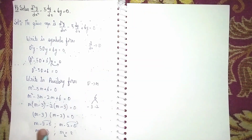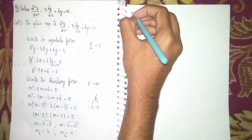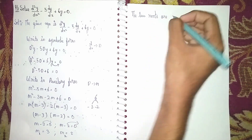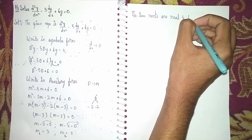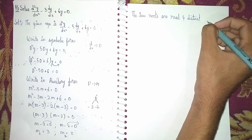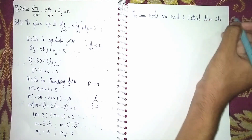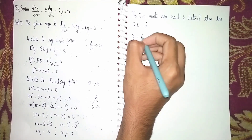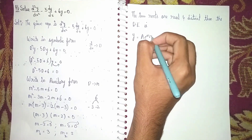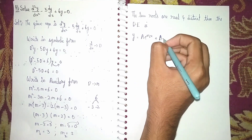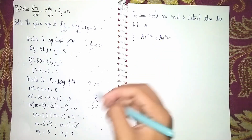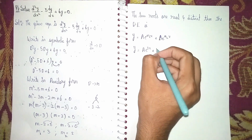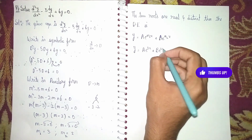The two roots are real and distinct. When the two roots are real and distinct, the general solution of the differential equation is y equals Ae^(m1·x) plus Be^(m2·x). Substituting m1 equals 3 and m2 equals 2, the answer is y equals Ae^(3x) plus Be^(2x). Thanks for watching.